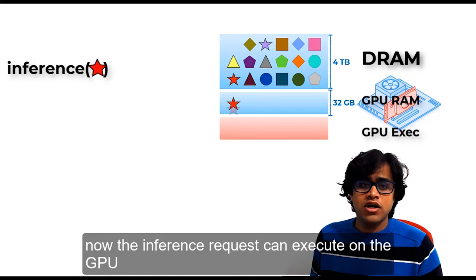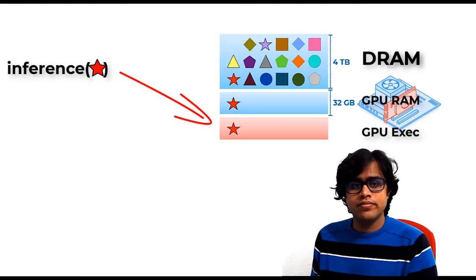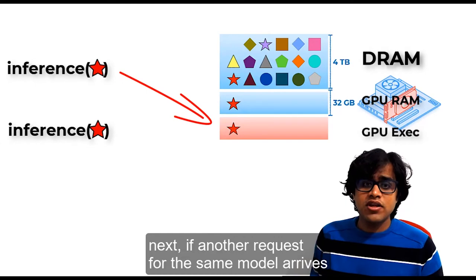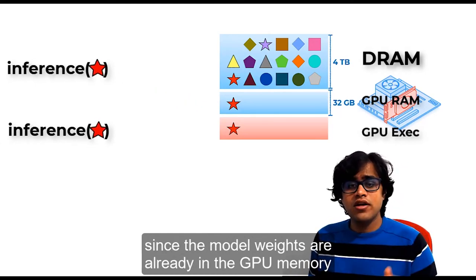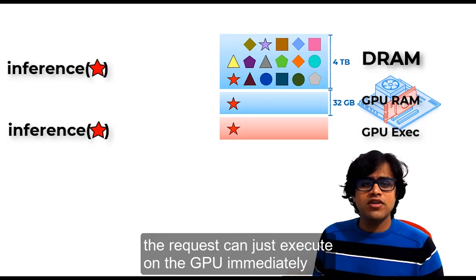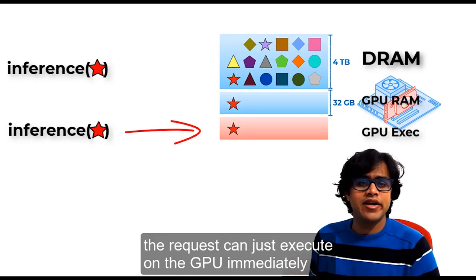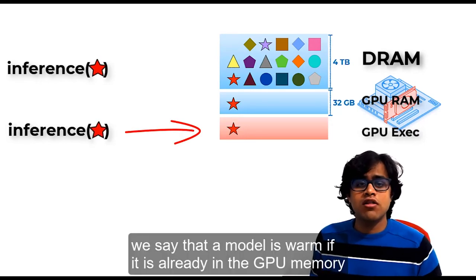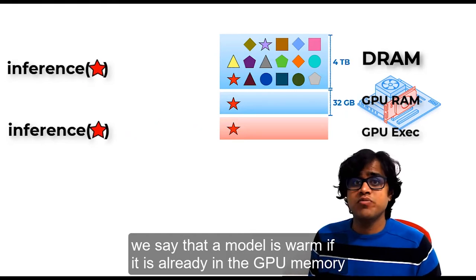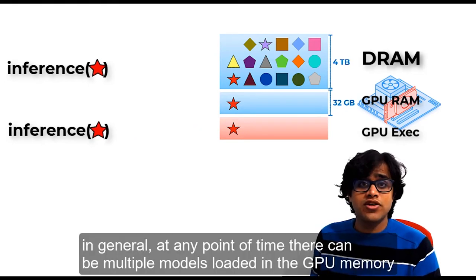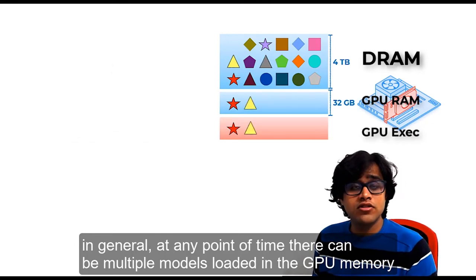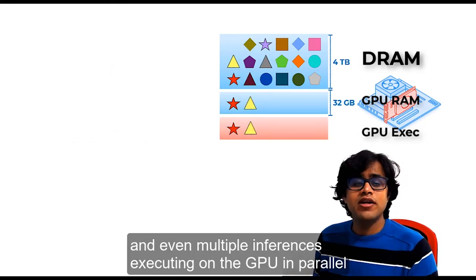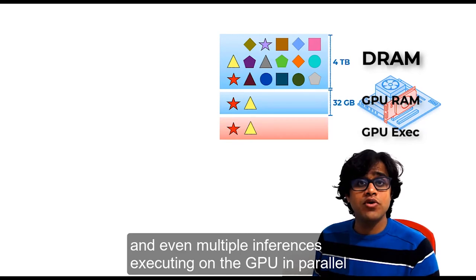Now the inference request can execute on the GPU. Next, if another request for the same model arrives, since the model weights are already in GPU memory, the request can just execute on the GPU immediately. We say that a model is warm if it is already in GPU memory. In general, at any point of time, there can be multiple models loaded in GPU memory and even multiple inferences executing over the GPU in parallel.